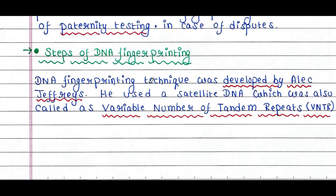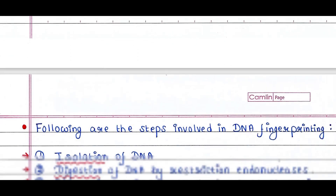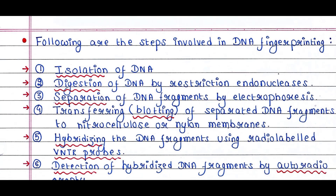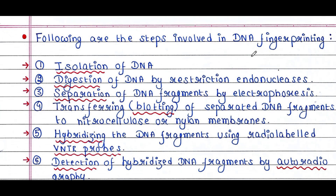The DNA fingerprinting technique was developed by Alec Jeffreys. He used a type of satellite DNA also called Variable Number of Tandem Repeats, or VNTR. The following are the steps involved in DNA fingerprinting.